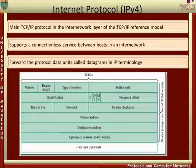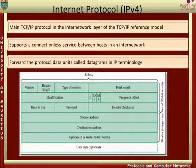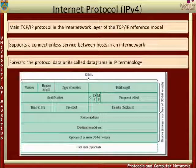Protocol identifies the protocol that is using IP, either TCP or UDP. Header checksum contains a simple form of cyclic redundancy check for a datagram, but is applied only to the header information. Source address contains the network address of the host which sent the datagram. Destination address contains the network address of the host which should receive the datagram. Options provides a way of identifying optional features associated with security or routing. User data contains the data from the higher layer.